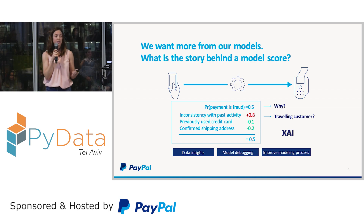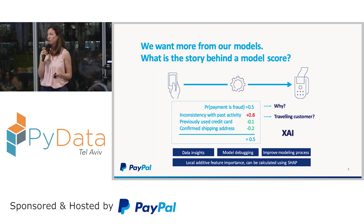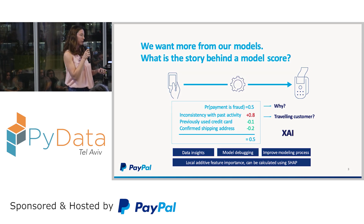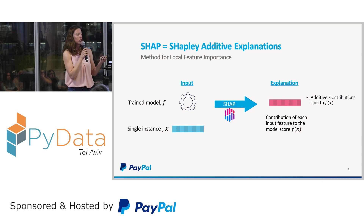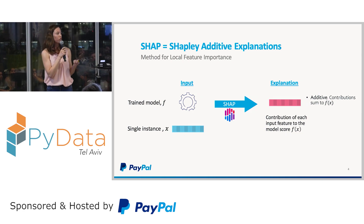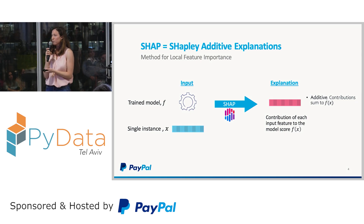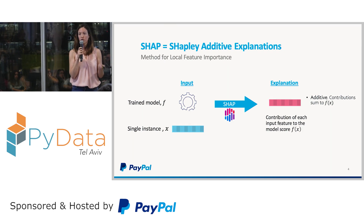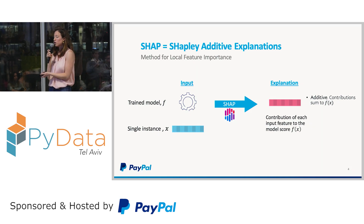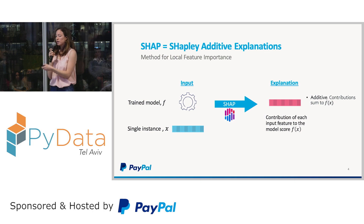This specific type of explanation — breaking the model score into feature attributions — is called local additive feature importance, and it can be calculated using SHAP. SHAP stands for SHapley Additive exPlanations. It is a method for local feature importance — local because we explain a specific instance at a time. The input for SHAP is a trained model f and a specific instance x. The output is an explanation: for every feature, we get the contribution of that feature to the model score f(x). It is also additive because the sum of all contributions is exactly f(x).